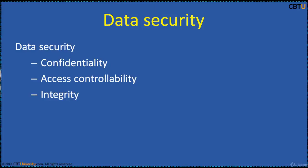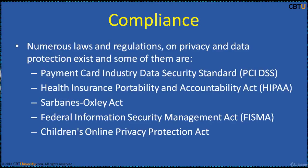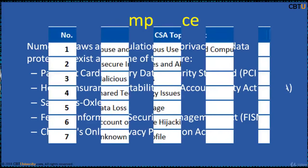Data security comprises three parameters: data confidentiality; access controllability, meaning only authorized users can access the data; and data integrity, which demands maintaining and assuring the accuracy and completeness of data. Numerous laws and regulations on privacy and data protection exist, including PCI DSS, HIPAA Act, SOX Act, FISMA and many others.